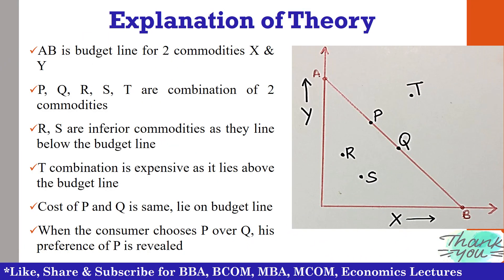Now let's discuss this theory by studying this figure. There are two commodities, X and Y, and AB is the budget line of the consumer. P, Q, R, S, and T are the combinations of two commodities. R and S are the inferior combinations as they are below the budget line, whereas T combination is expensive as it is above the budget line. P and Q have the same cost. When a consumer chooses combination P over Q, the preference of the consumer is revealed. As P is within his budget line, it is known as his preferred product or commodity.